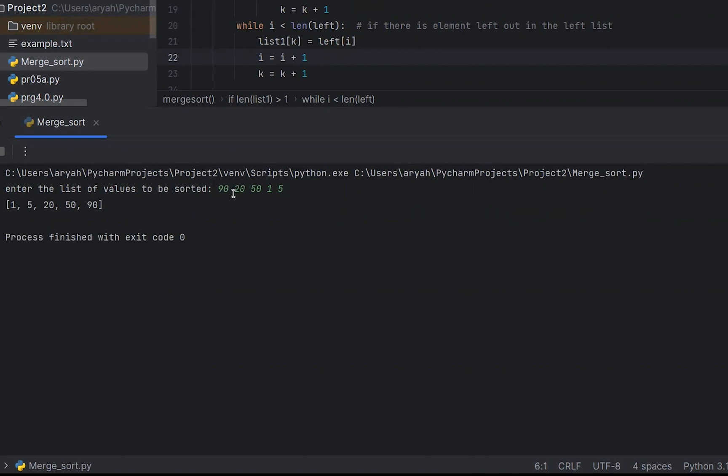So we will get sorted elements. We will use 1, 5, 20, 50, 90. So we take unsorted elements and get sorted order-wise output.